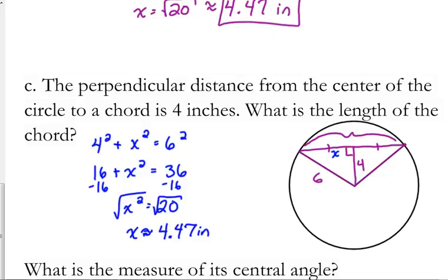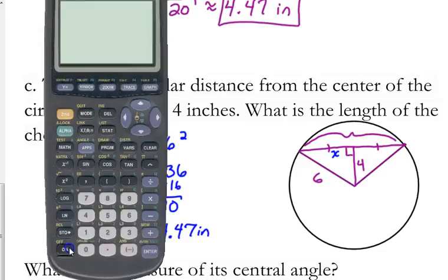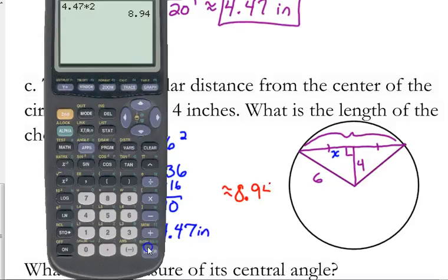But that's only half of it, so we're going to multiply that by 2. 4.47 times 2 is going to be 8.94. So the length of the chord is approximately 8.94 inches.